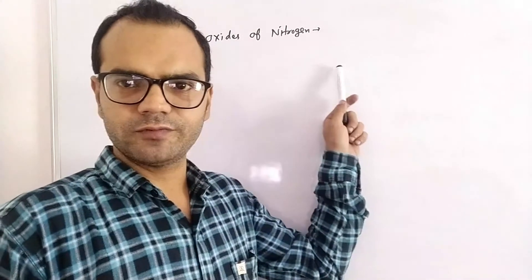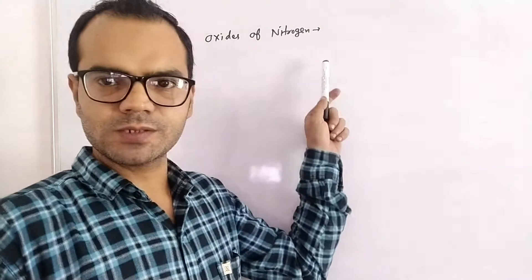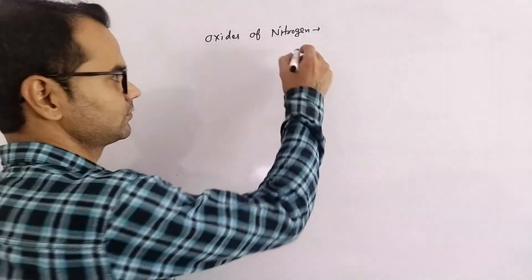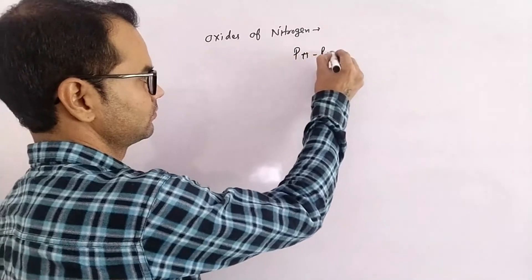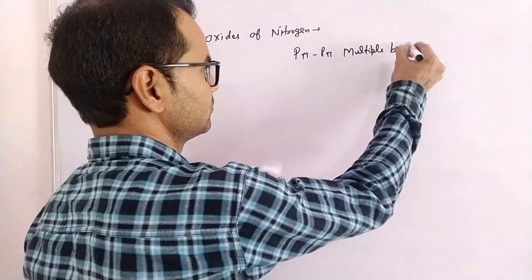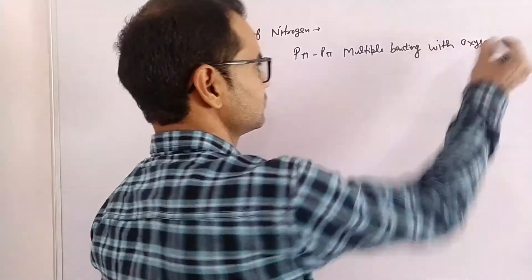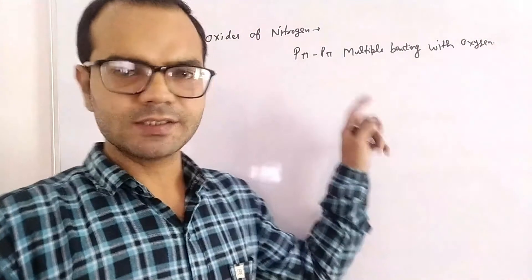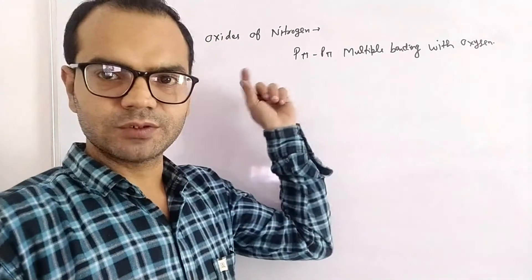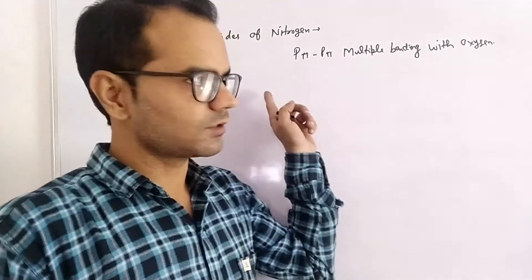Nitrogen forms a large number of oxides with variable oxidation state. This is possible because of its tendency to form pπ-pπ bonding with oxygen. That results in a large number of oxides of nitrogen with variable oxidation state.